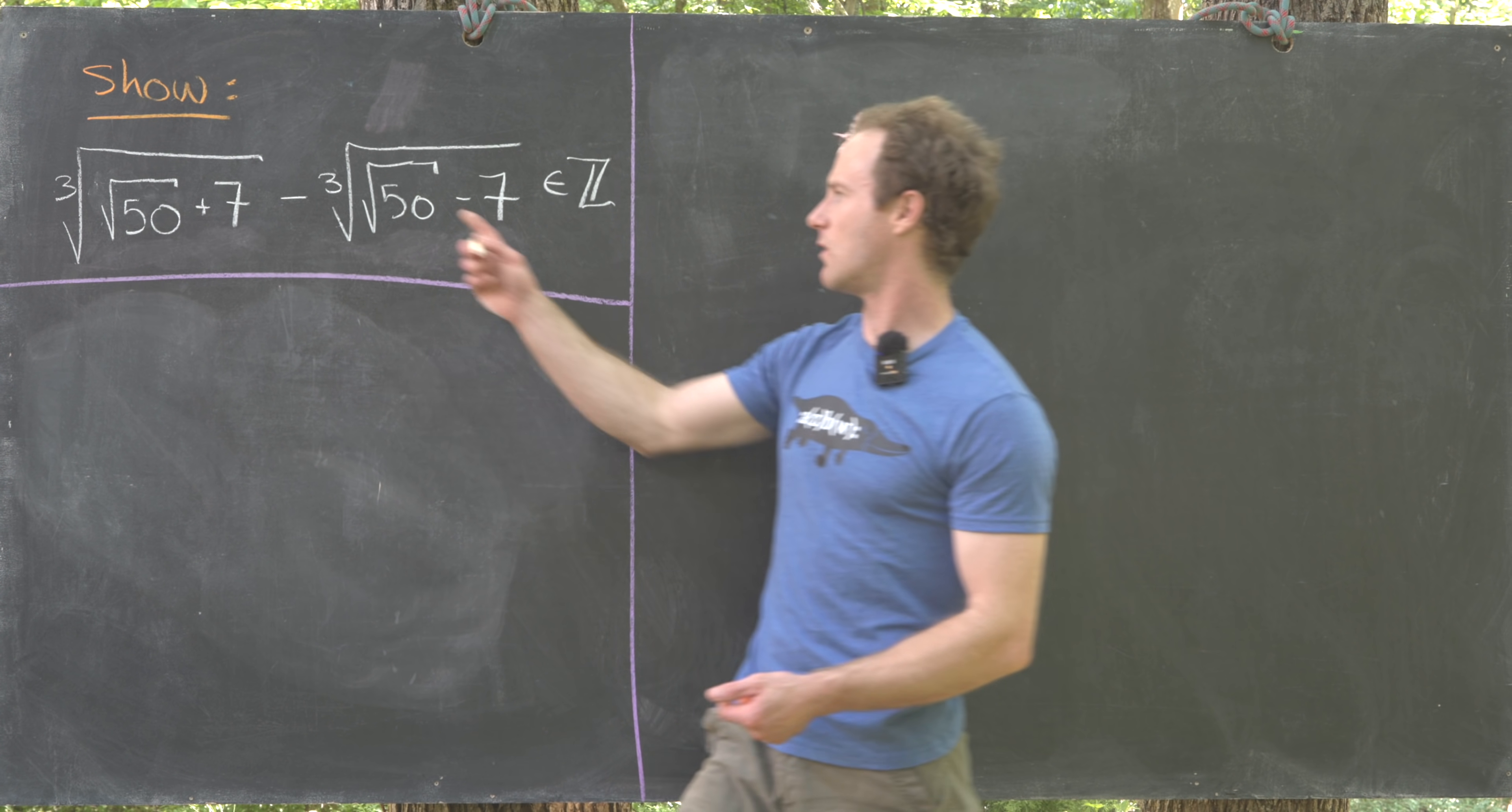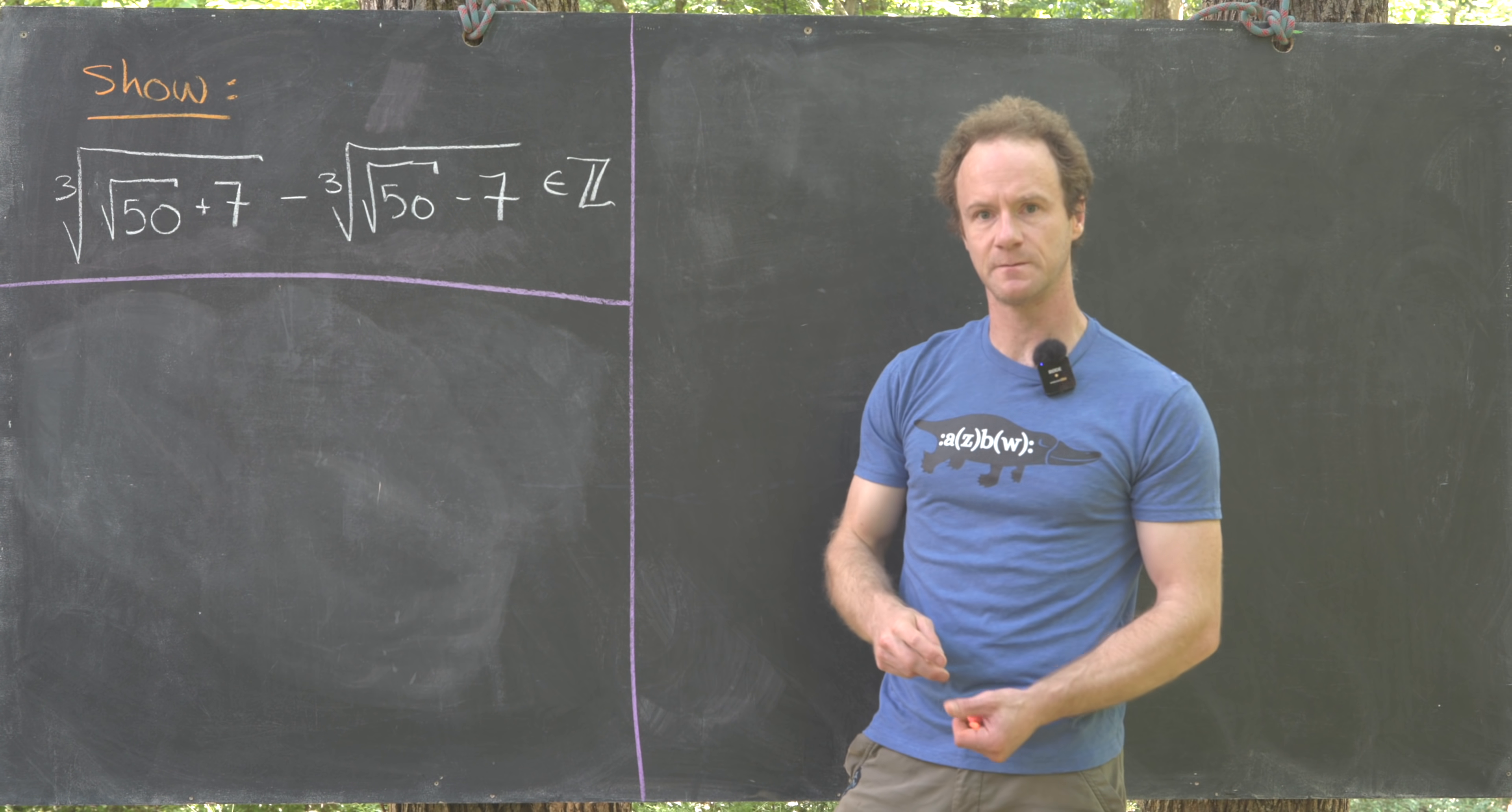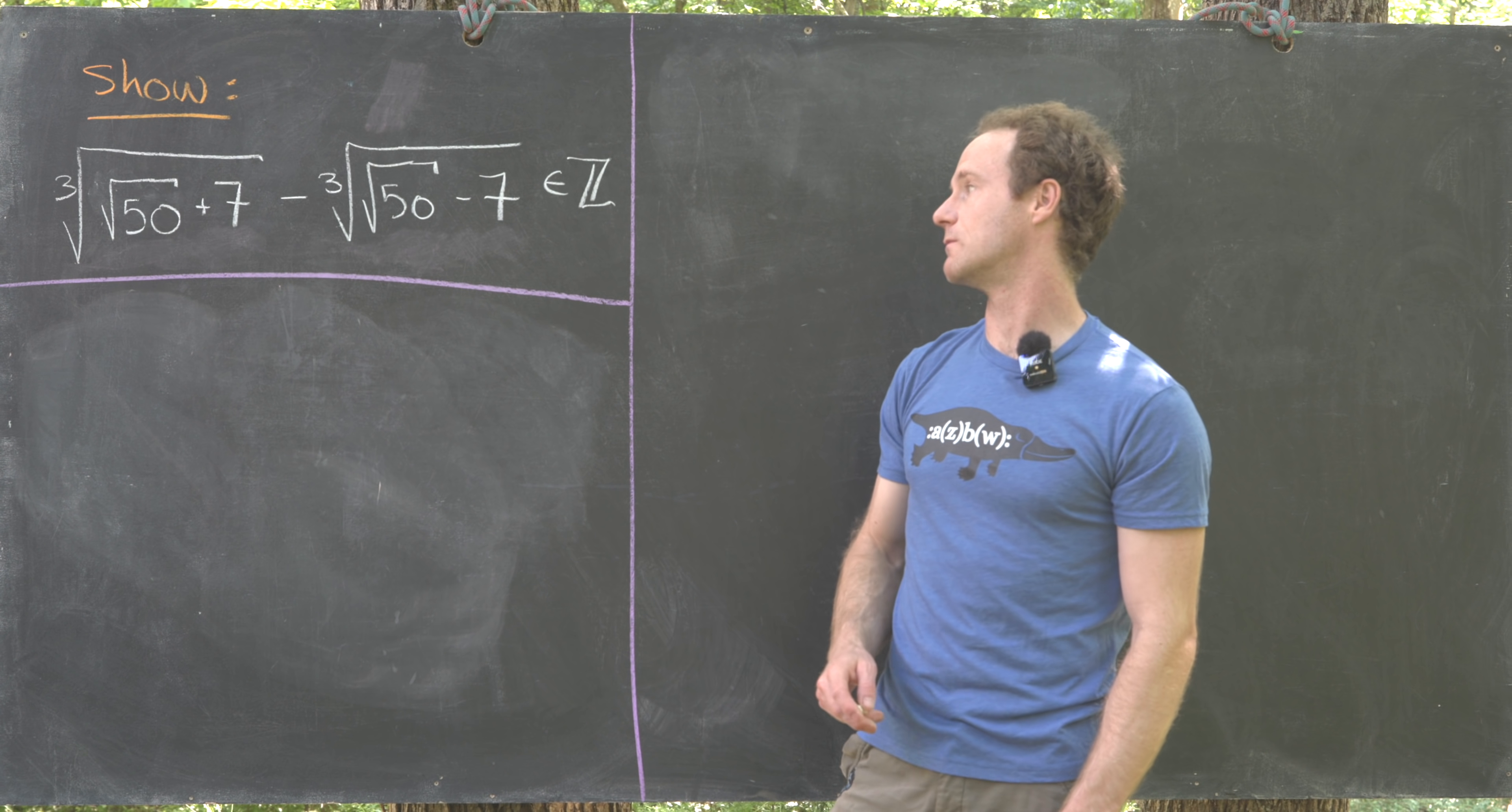So somehow all of the irrationality of this crazy object here cancels away when we take this difference. Before we get started, I want to make a couple of observations that'll make our calculation a bit more efficient.